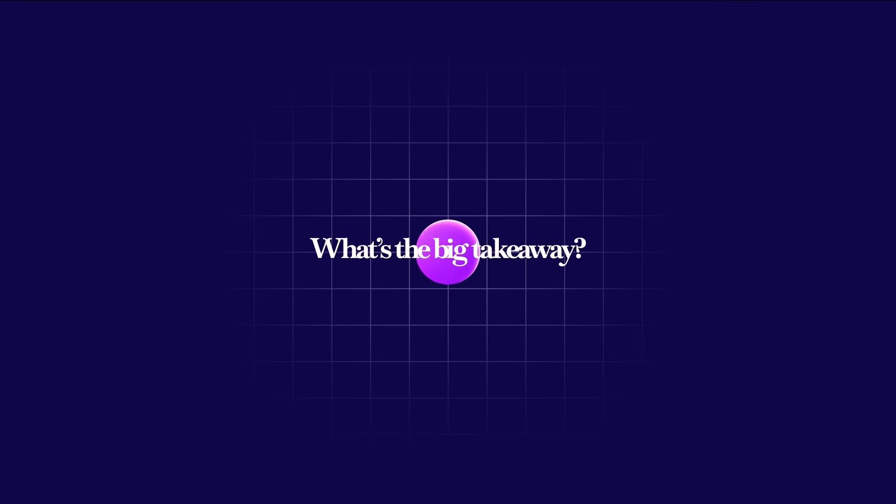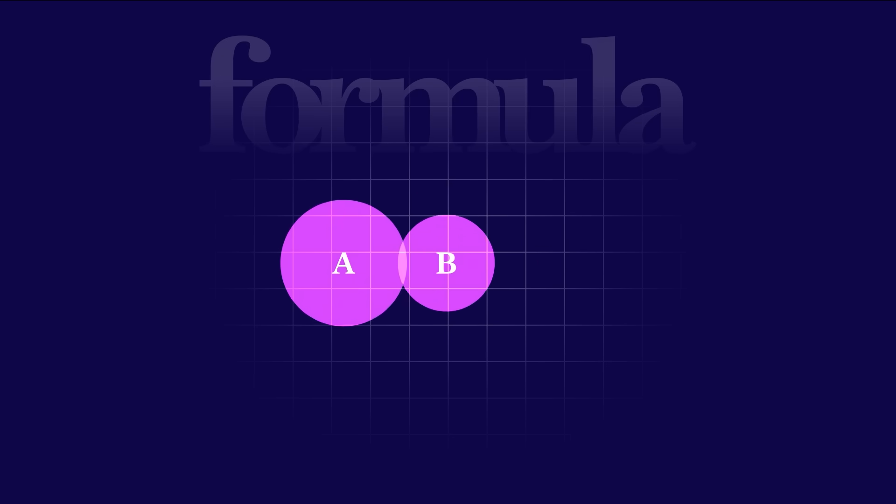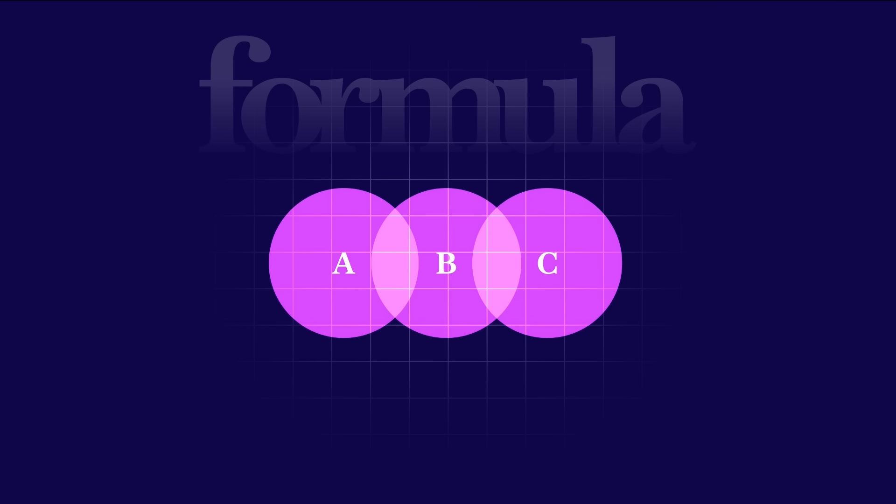So what's the big takeaway? Creativity. It's probability plus combinations, plus time, plus balance. It's math hiding in plain sight. If you want to be more creative, the formula is simple. Produce more. Quantity matters. Recombine relentlessly. Mix old things into new forms. Stick with it. Time compounds your growth. Find the edge of chaos. Balance structure with freedom.